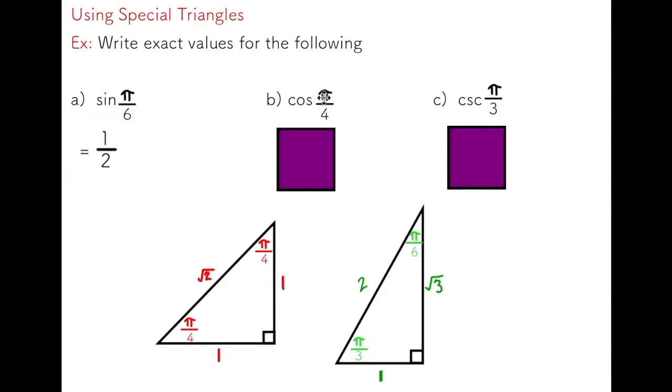For cos of pi over 4, this time I'm going to grab this triangle because this is the one that has the pi over 4 angle, and the cosine ratio is the adjacent over the hypotenuse. In this case, it would just be 1 over root 2. And you can see this is an exact answer. I'm not going to round this and write it as 0.707. I'm writing it as an exact answer.